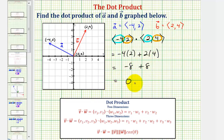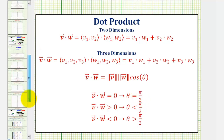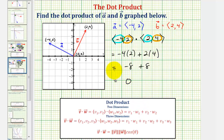Remember, when the dot product equals zero, the two vectors are orthogonal or perpendicular, and theta is equal to pi over two radians. Looking at the graph, this verifies our result — the angle theta here is pi over two radians, and therefore these two vectors are orthogonal or perpendicular.